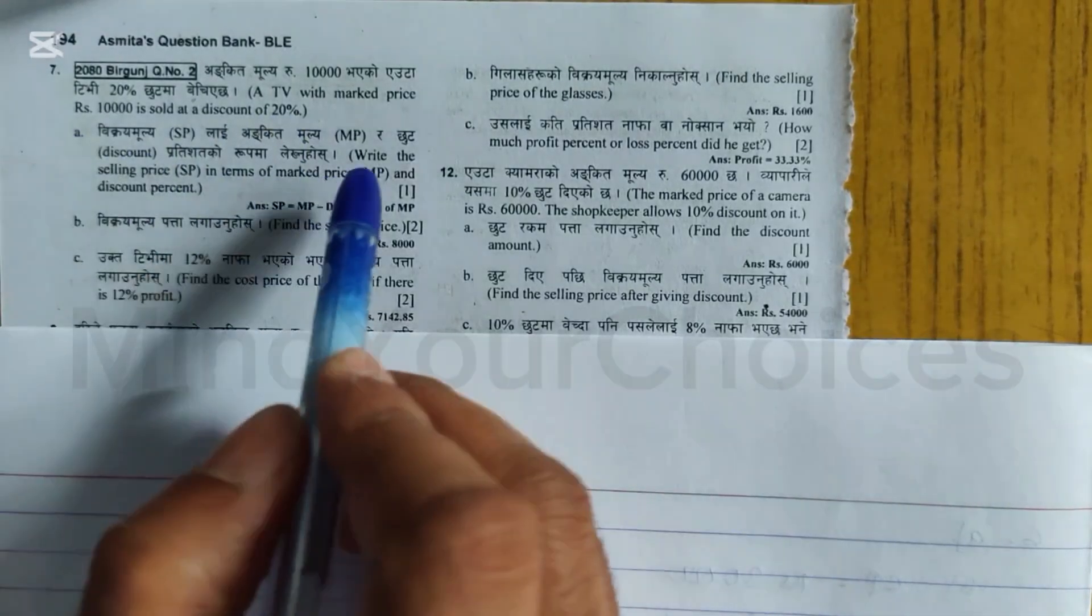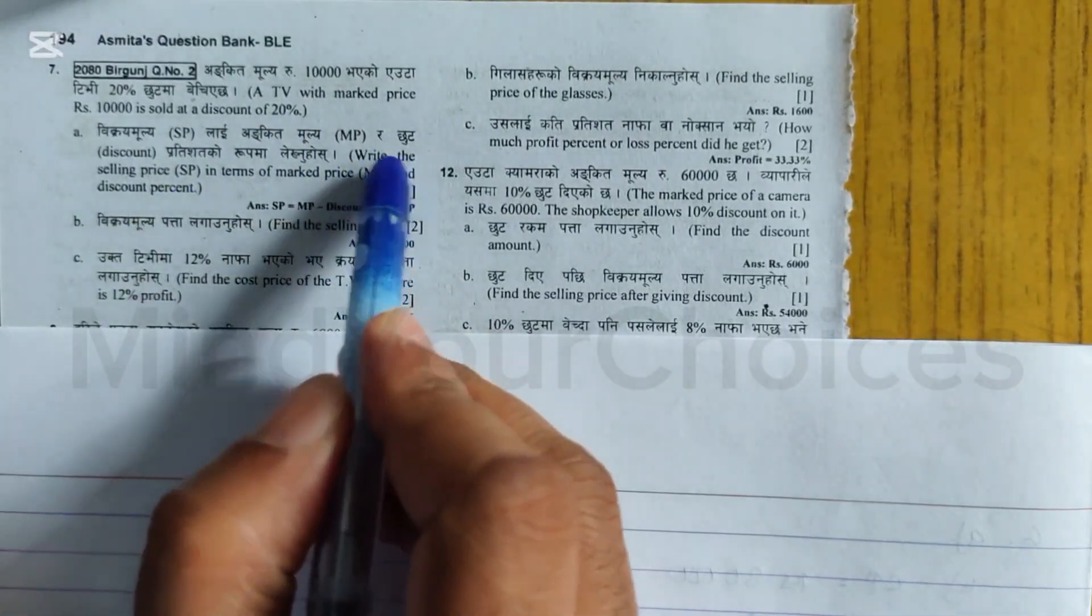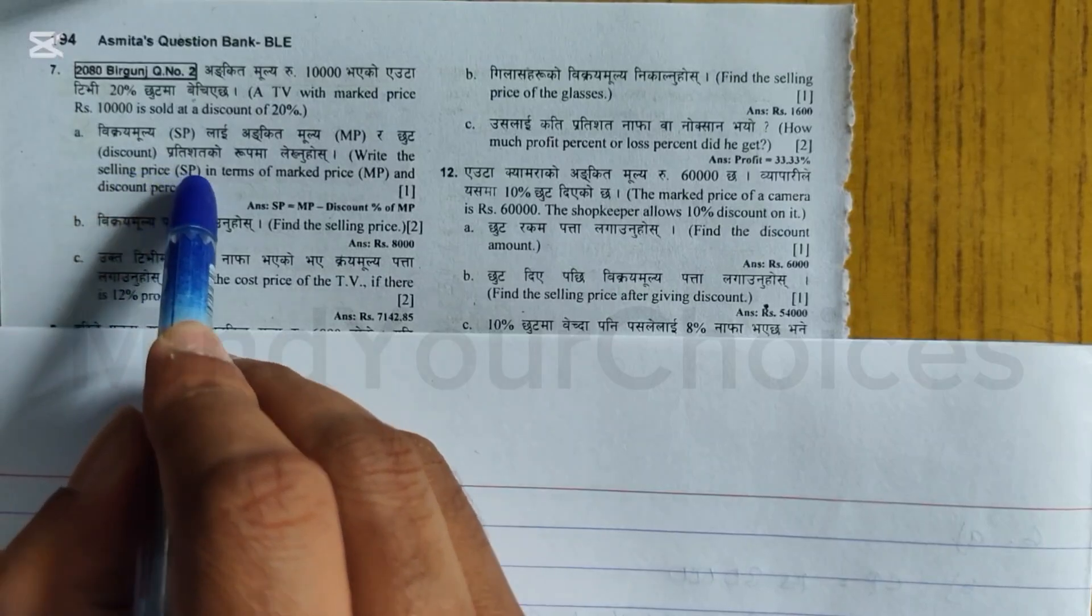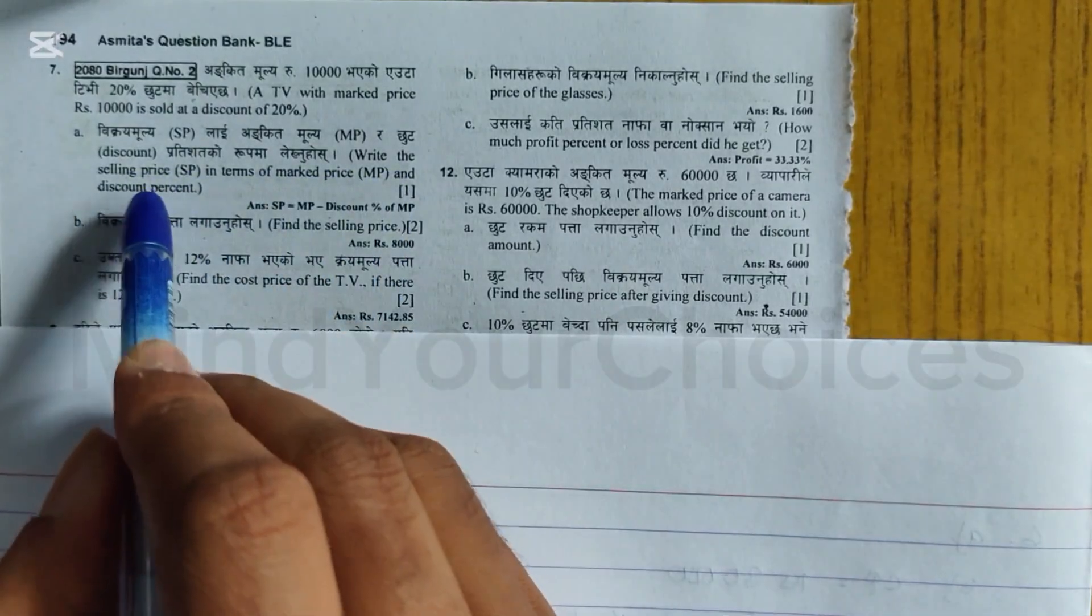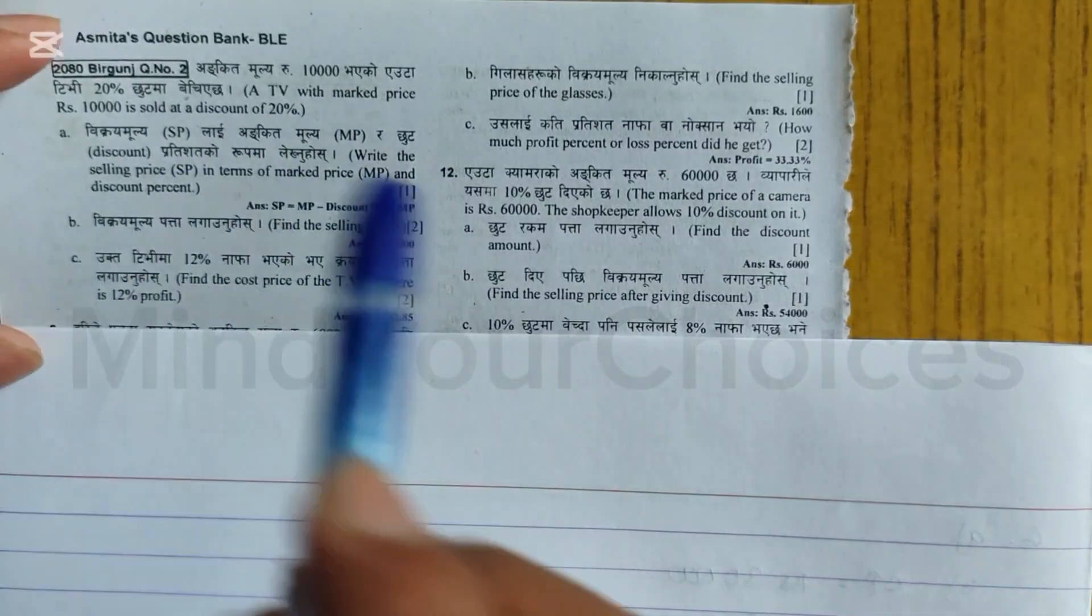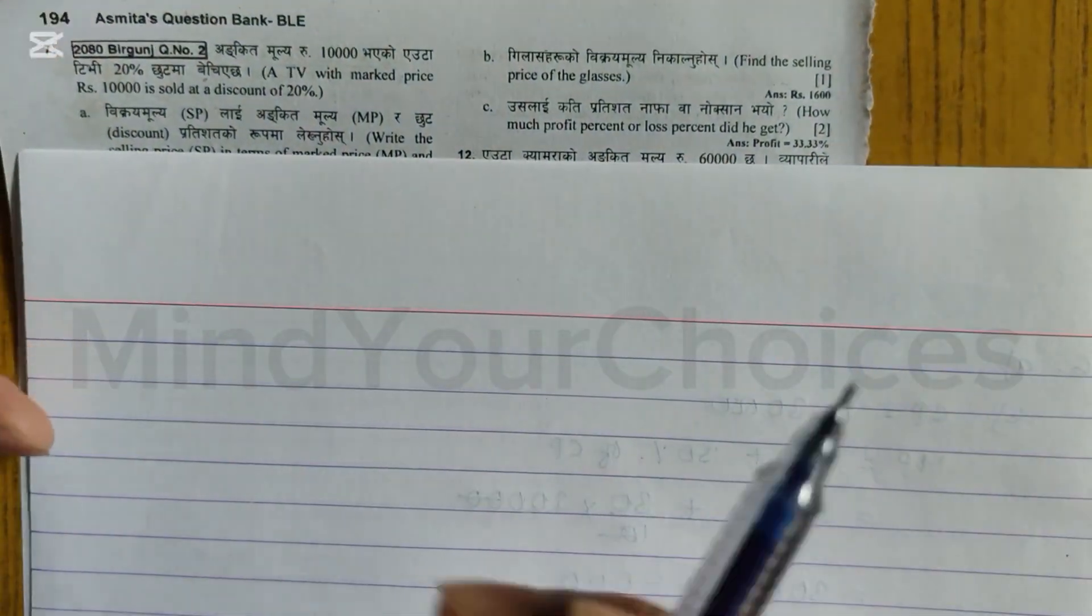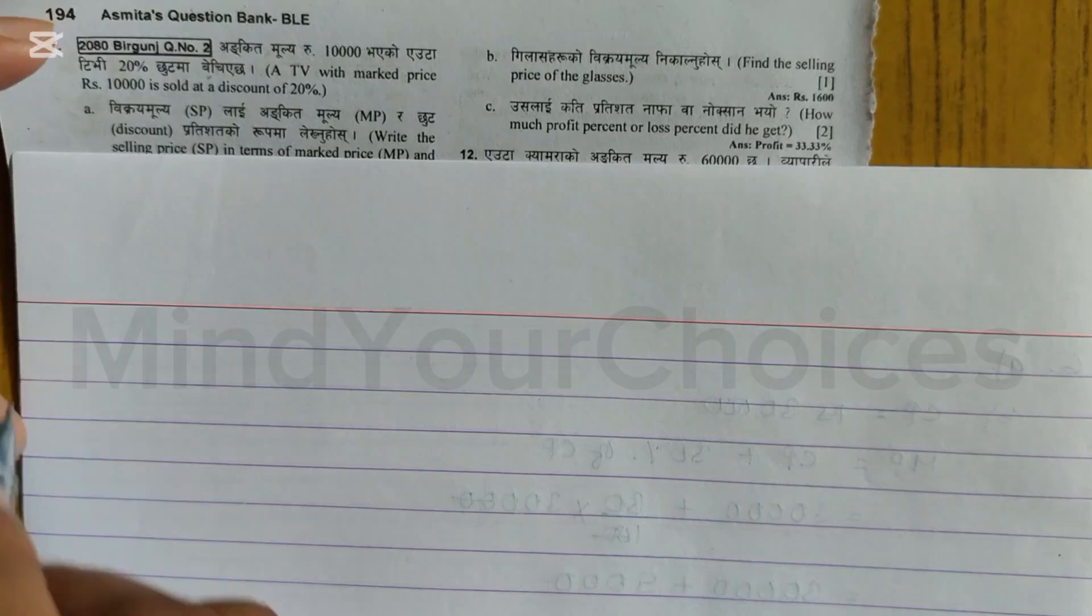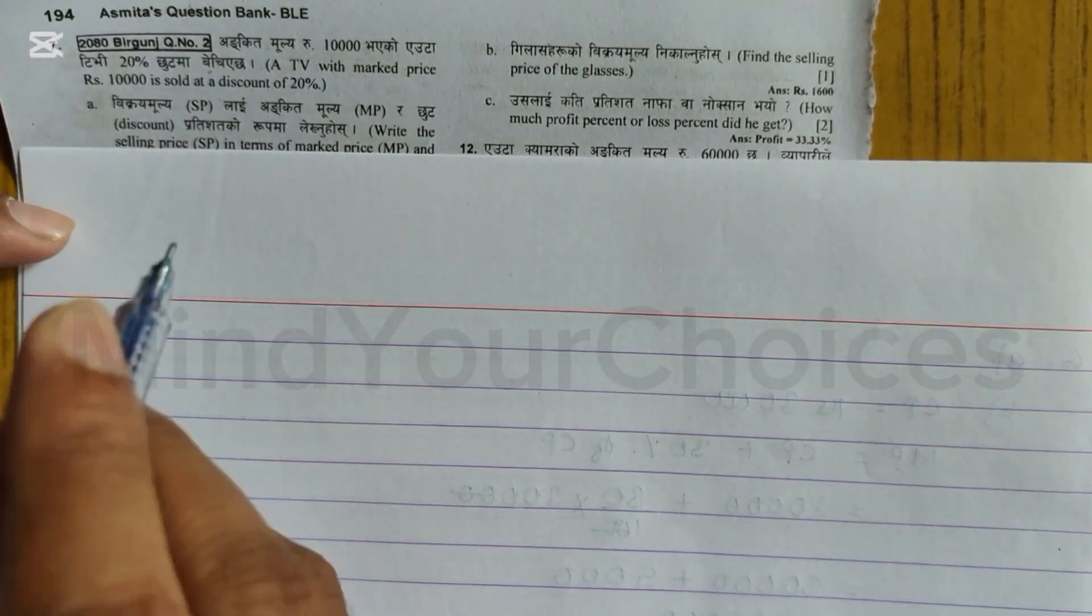Number A asks: write the selling price in terms of mark price and discount percentage. The formula I already provided in the video I uploaded earlier, so please check that one.